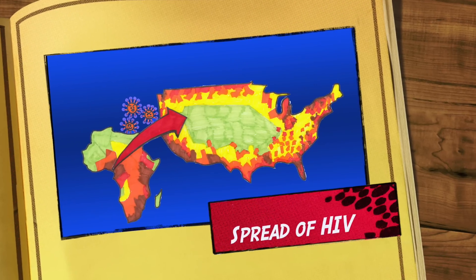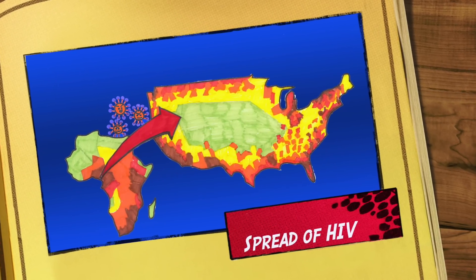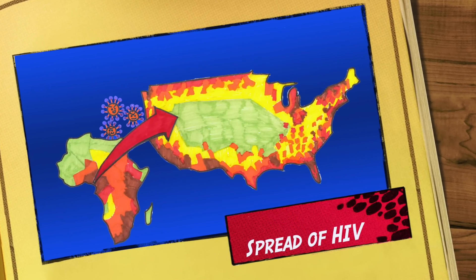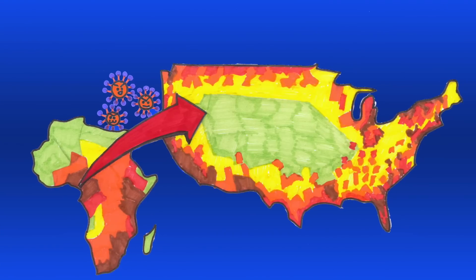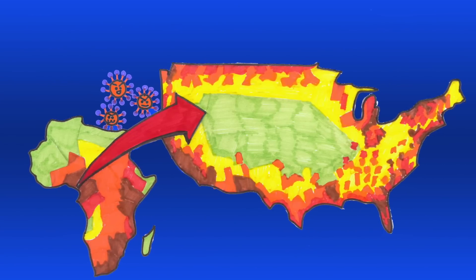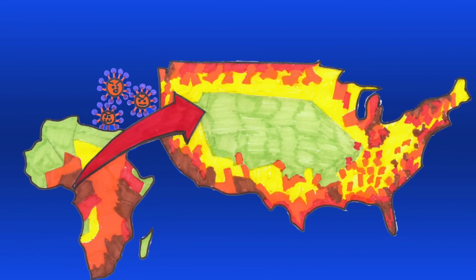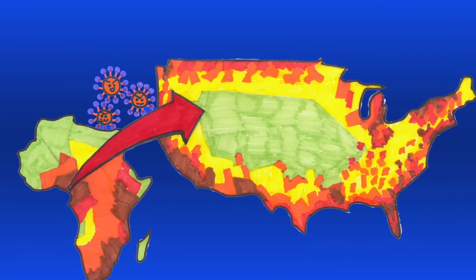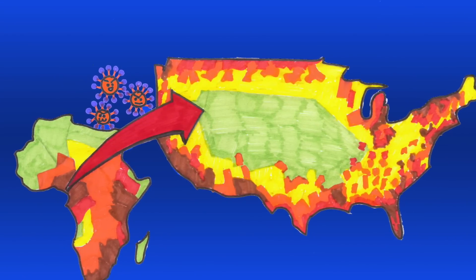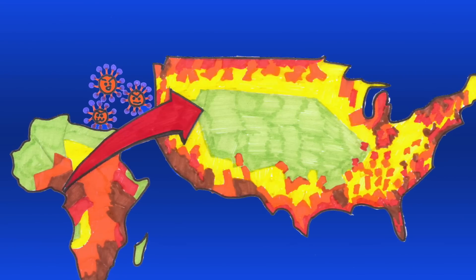Since its origin in Africa, HIV has spread to most of the world. HIV started in West Africa and has dissipated to the major cities in the United States. In the United States, AIDS was first recognized in 1981 in young homosexual men who succumbed to rare lung infections.